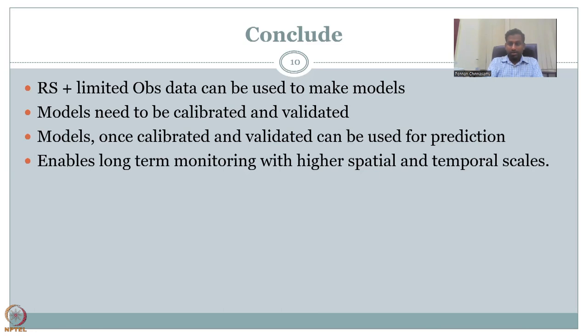We should mix remote sensing with whatever limited observed data we have to predict water quality parameters. RS helps with limited observation data — use them together, make models, calibrate and validate periodically. Once calibrated, models can be used for prediction to enable long-term monitoring with higher spatial and temporal resolutions, which is needed for effective sustainable rural development and mapping. With this I would like to conclude today's lecture. I will see you in Week 12, Lecture 4. Thank you.